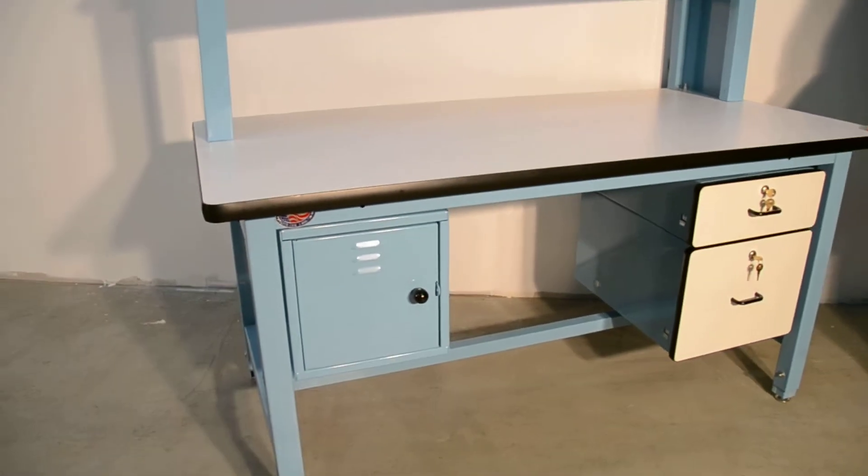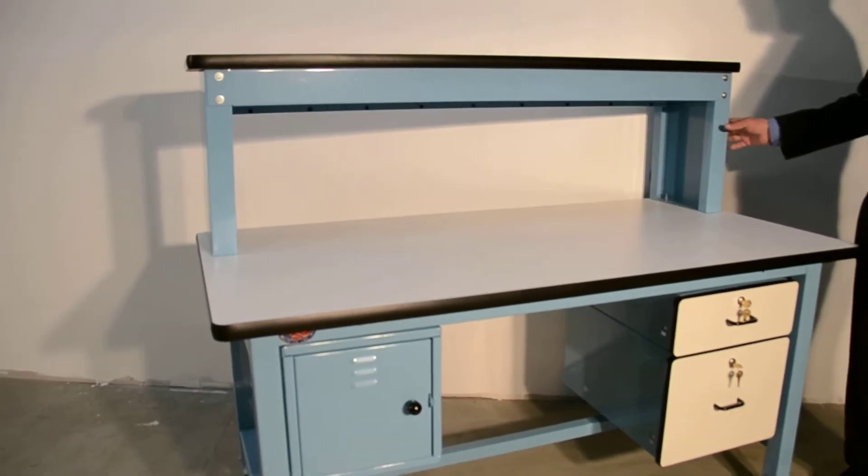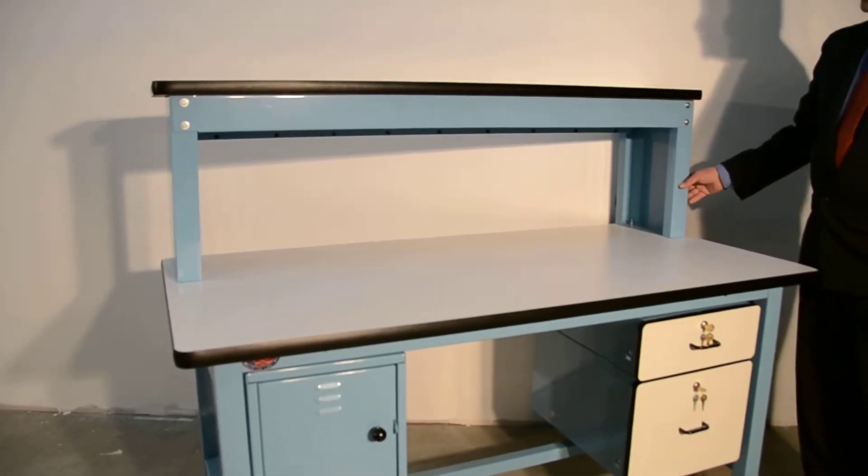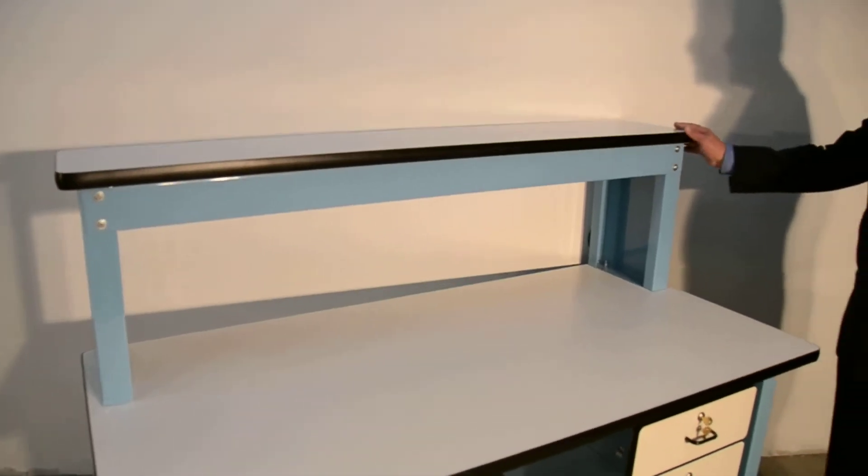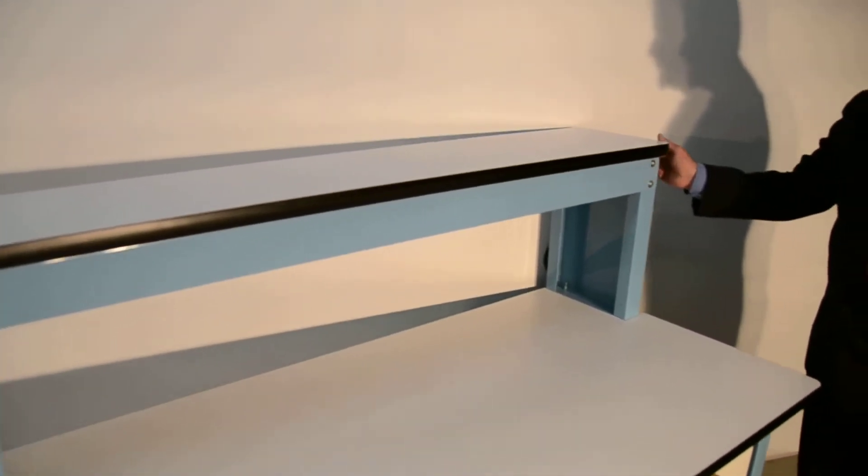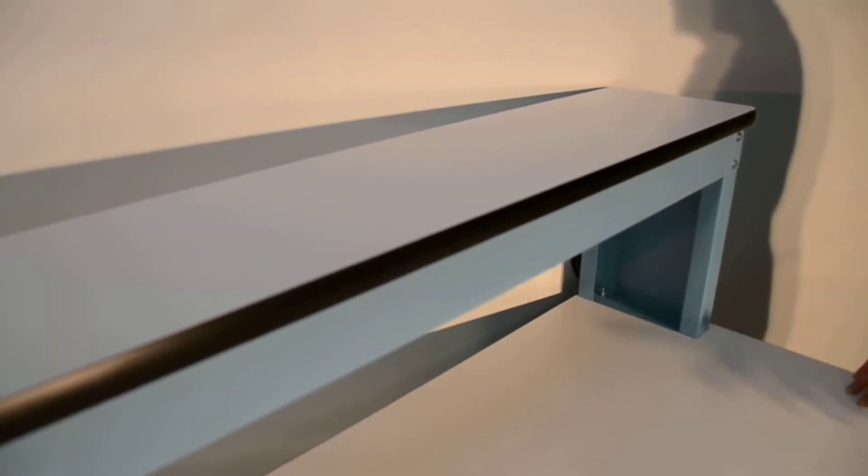In addition to the padlock drawer, we also have our riser shelf. It's 12 inches deep, 18 inches high. This is shown with the standard laminate work surface with T-molded edging, matching the work surface and door faces.